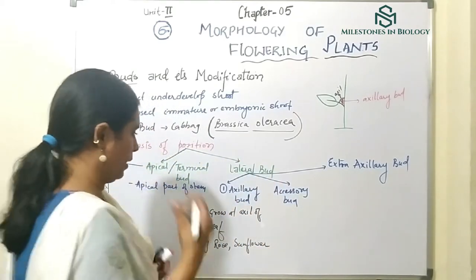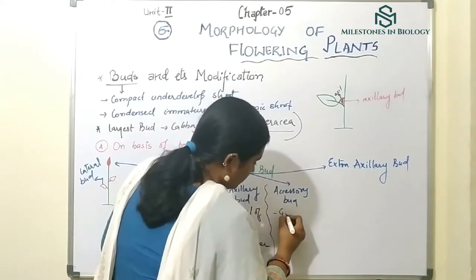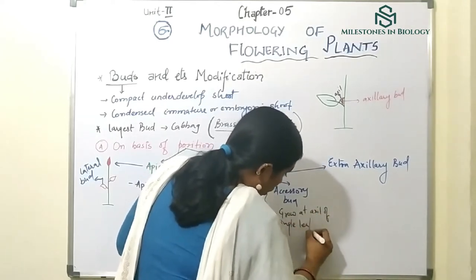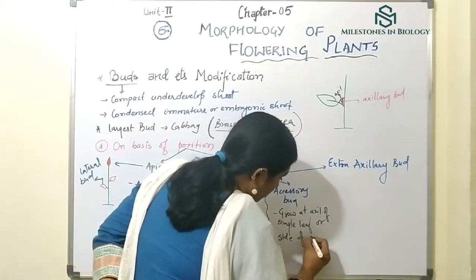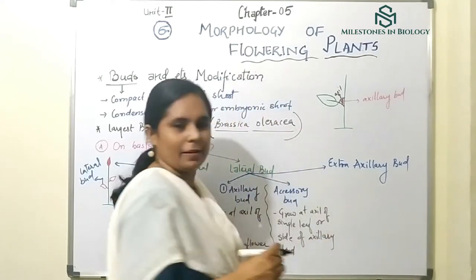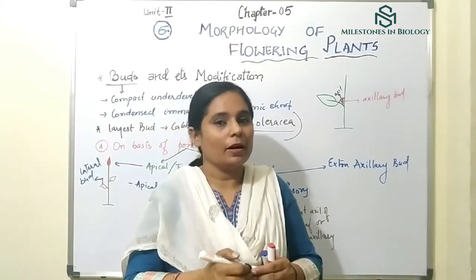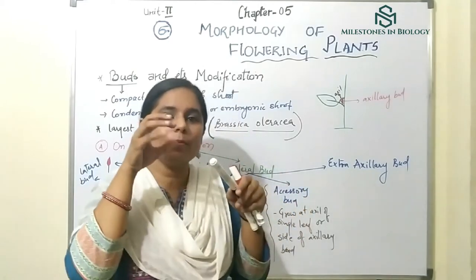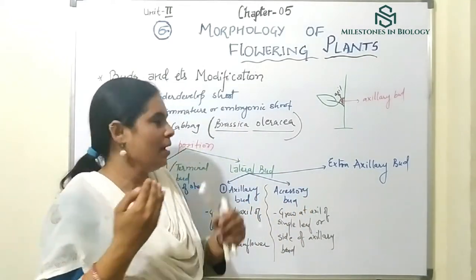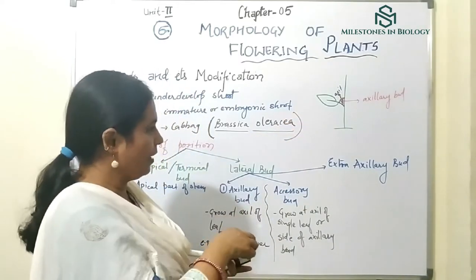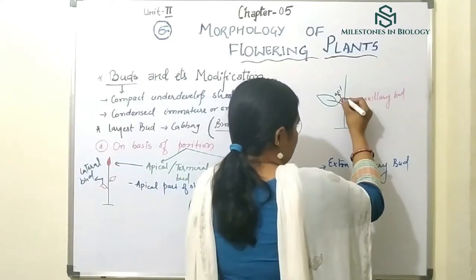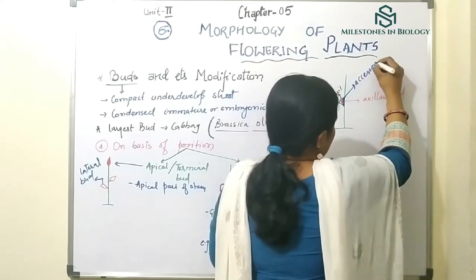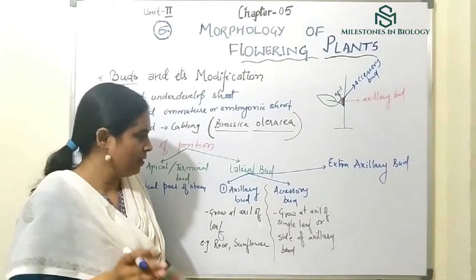Next is the accessory bud. The accessory bud grows at the axil of a single leaf or at the side of an axillary bud. Just as accessories are things added extra beyond the basic — similarly, if any bud grows beside the axillary bud, that is called an accessory bud.